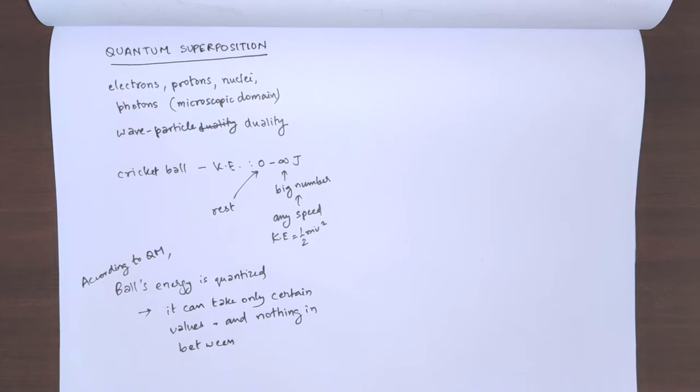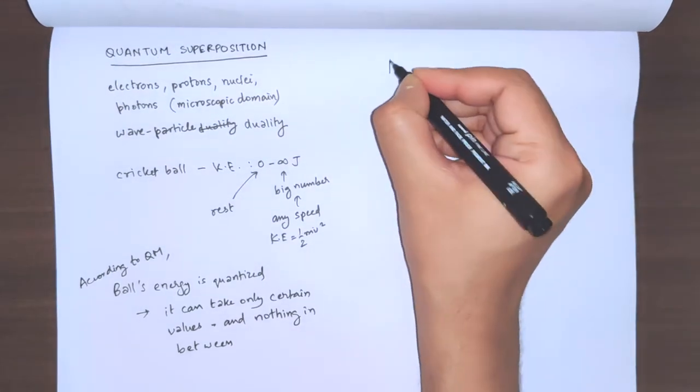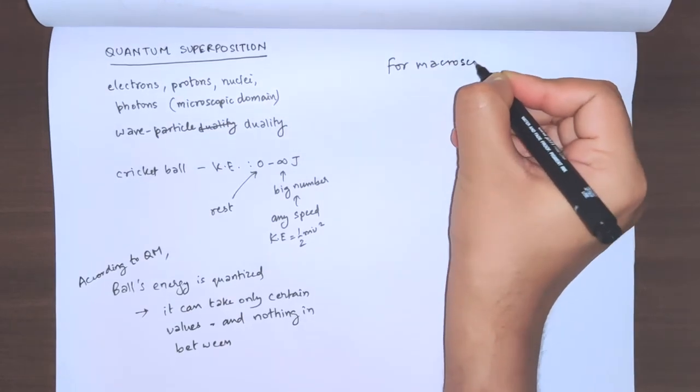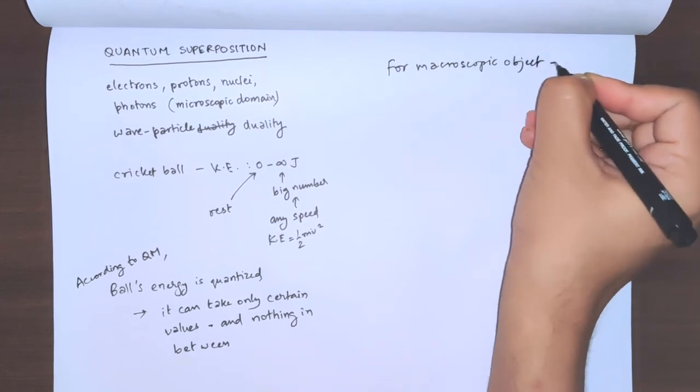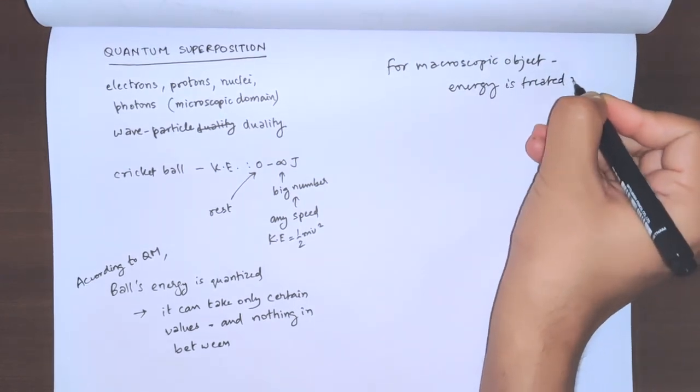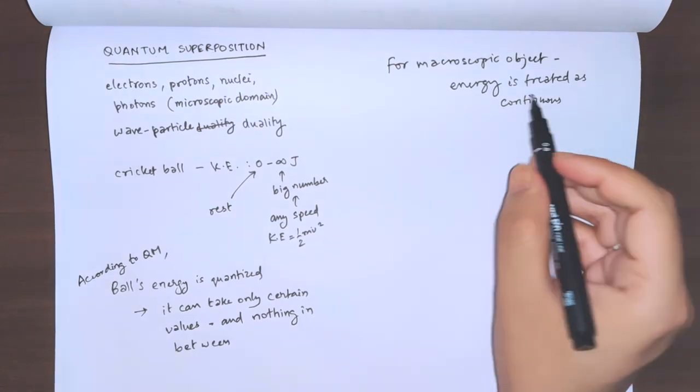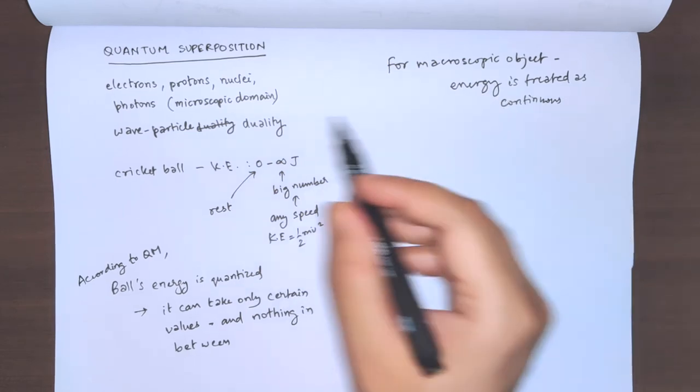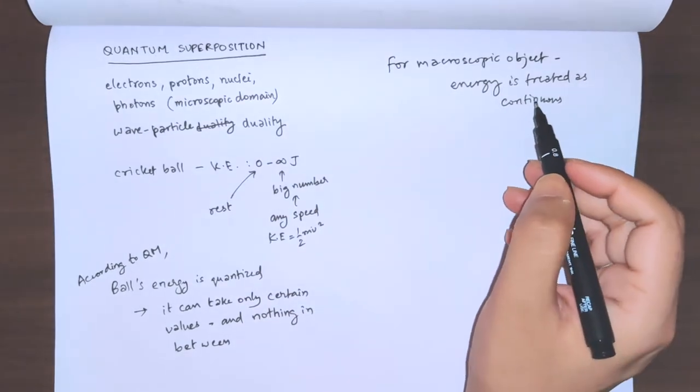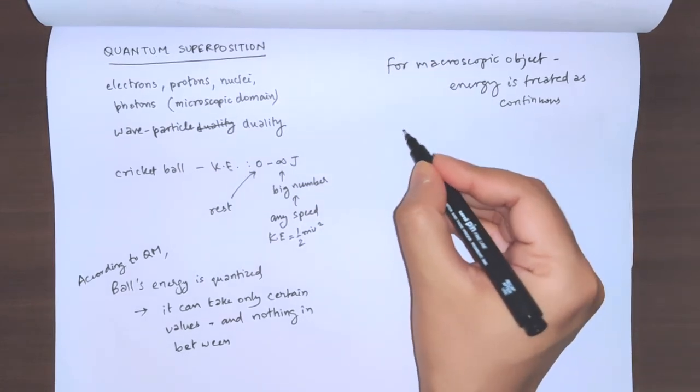This is counterintuitive for us human beings because we cannot observe it with our classical eyes. The gaps in the energy are too small to measure on the macroscopic level, as such it is treated to be continuous for macroscopic objects. The energy is taken to be continuous, is treated as continuous. But this energy is not continuous when we go to the microscopic domain. In the subatomic particle or elementary particle case, the gaps are significant. It's more pronounced at smaller scales - the energy gaps are more pronounced at smaller scales.